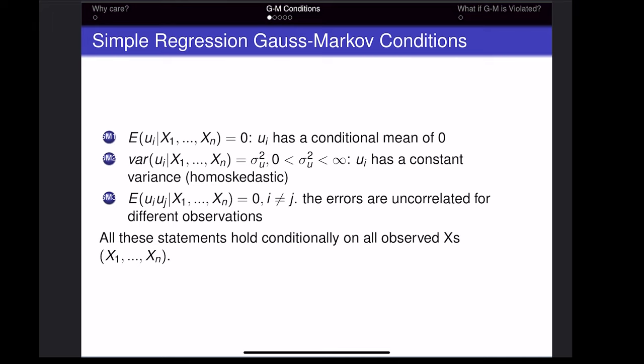In order for these Gauss-Markov conditions to hold, we need to know the values of our x variables. Notice that all of them involve a conditional probability where the statement is conditional on the x values in our sample.